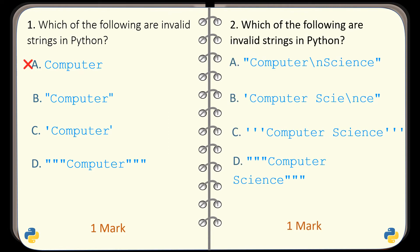Question number 2. Again, identify the invalid string. The invalid string is given in option B. Here the starting and ending quotation marks are mismatching — they should be the same.